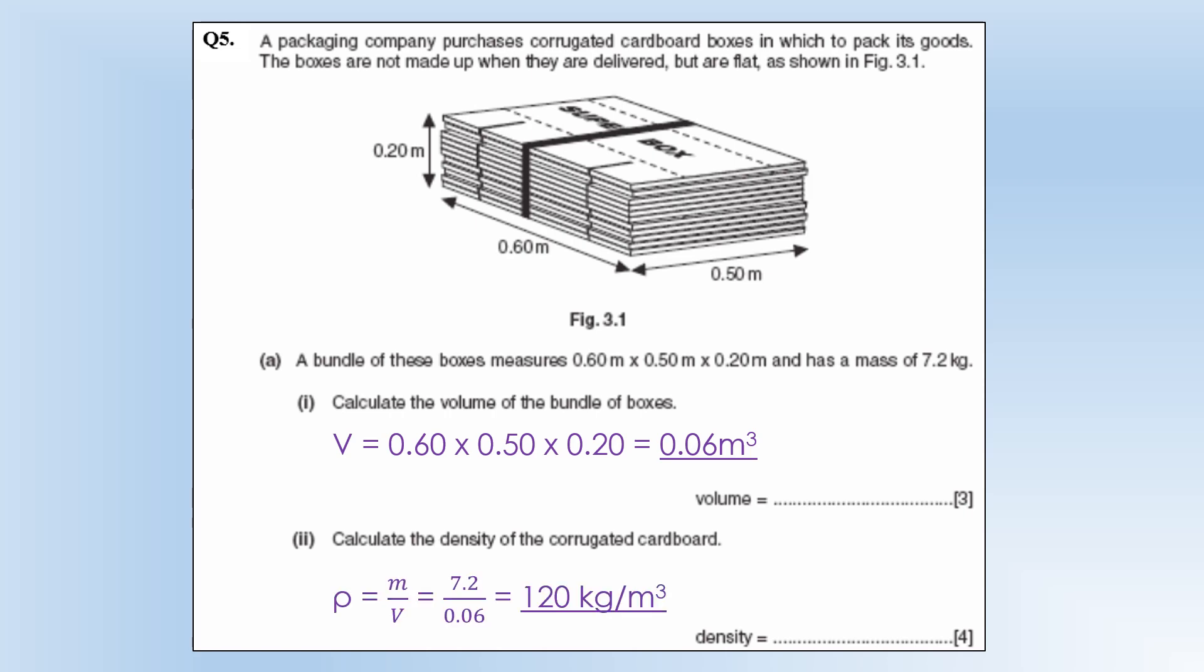to get the density we just do mass divided by that and this time we've got kilograms per meter cubed as the unit for our density.